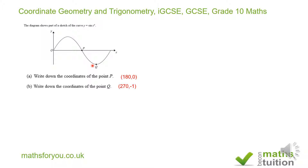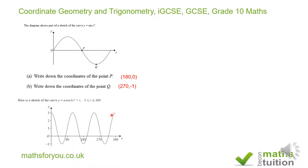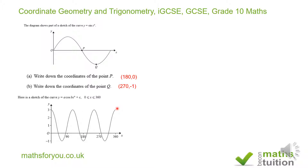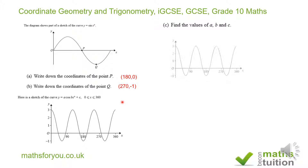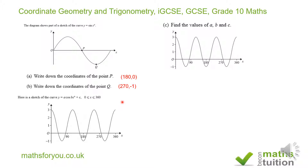For part C, here is a sketch of the curve y = a·cos(Bx) degrees + C, where x is greater than or equal to zero and less than or equal to 360. Find the values of a, B, and C.